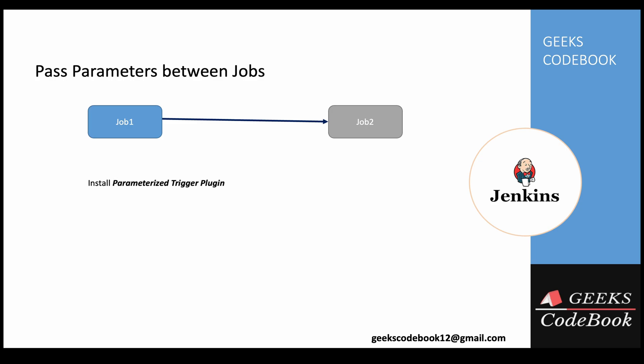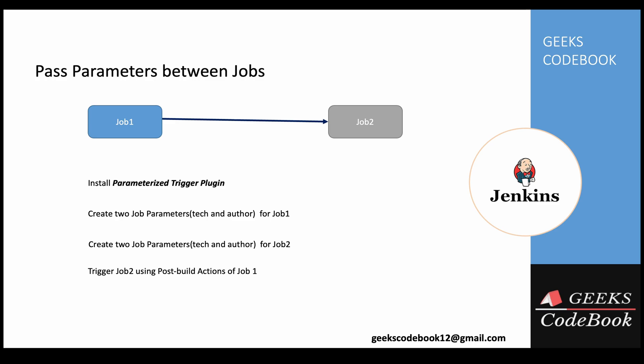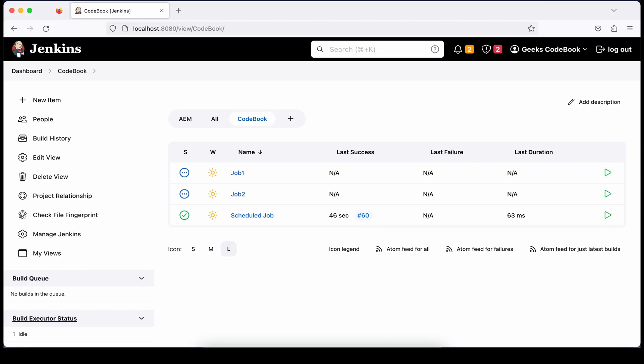To achieve this, you need the Parameterized Trigger plugin — we'll install this. Then we will create two parameters in Job 1, and I'll also create the same parameters in Job 2 with the same names, because the second job should also have those same parameters. We'll trigger Job 2 from Job 1 in the post-build section.